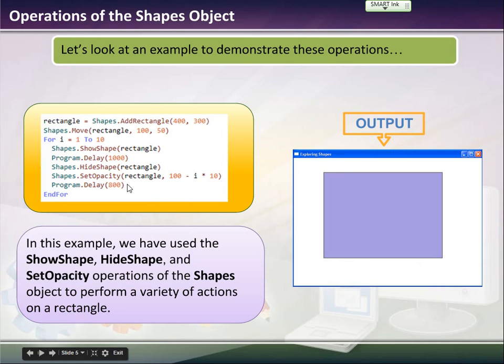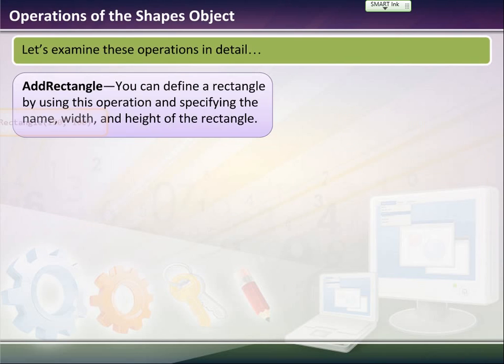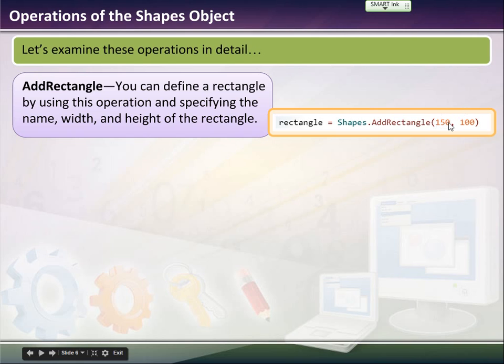We'll have to write the program, but basically that box, that rectangle, will slowly just fade out. Now we can add a rectangle. Probably should have defined this before we showed the previous program. To add rectangle, you can define the rectangle by using this operation by specifying the name of the rectangle, the width, and the height. So this would be the width of the rectangle, which would be 150 pixels, and then the height of the rectangle, which would be 100.